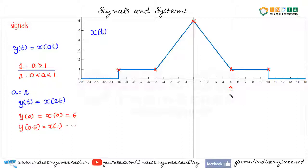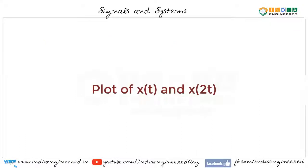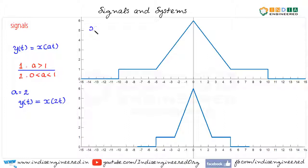That should be at 5 by 2 that is 2.5. So, it has to be at 10 by 2 that is 5. Similarly, this point will come at minus 2.5 in our new signal and this point will be at minus 10 by 2 that is minus 5. So, here we have our x of t and this is y of t that is x of 2t. x of 0 and y of 0 are same and here we have x of 5.